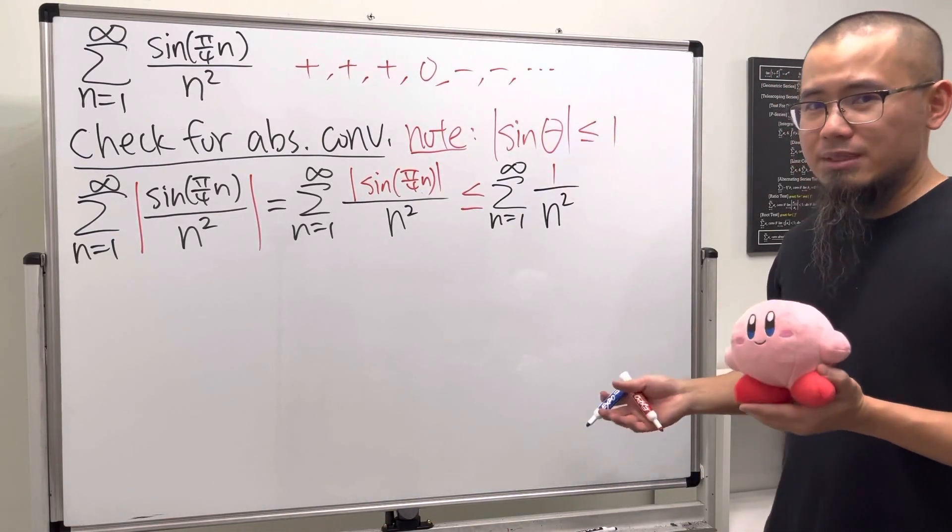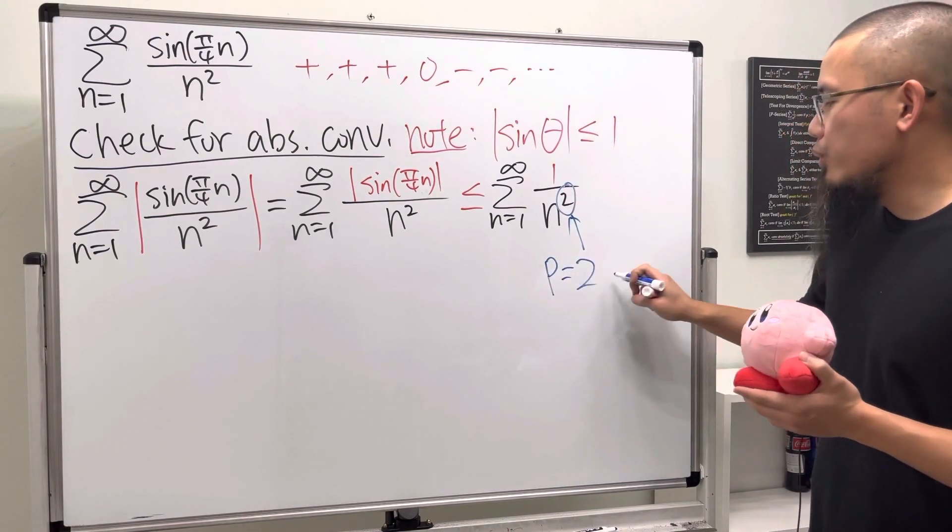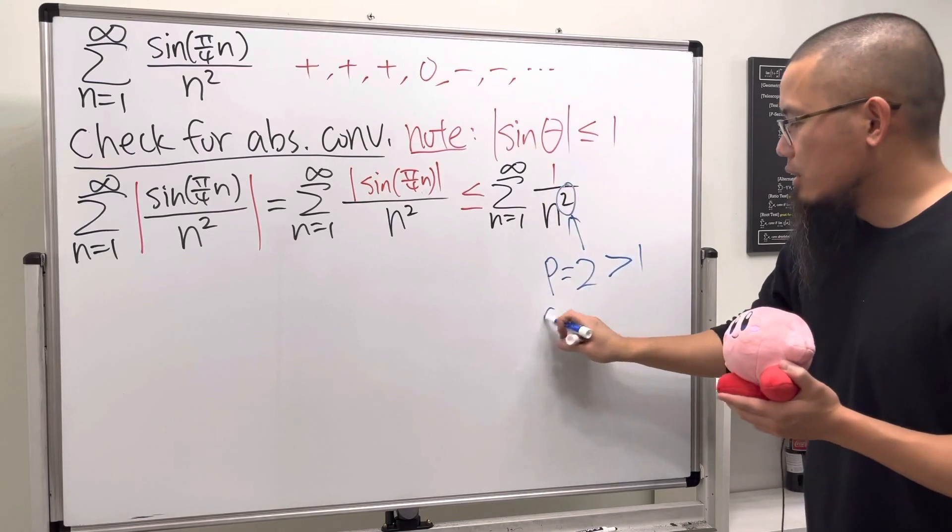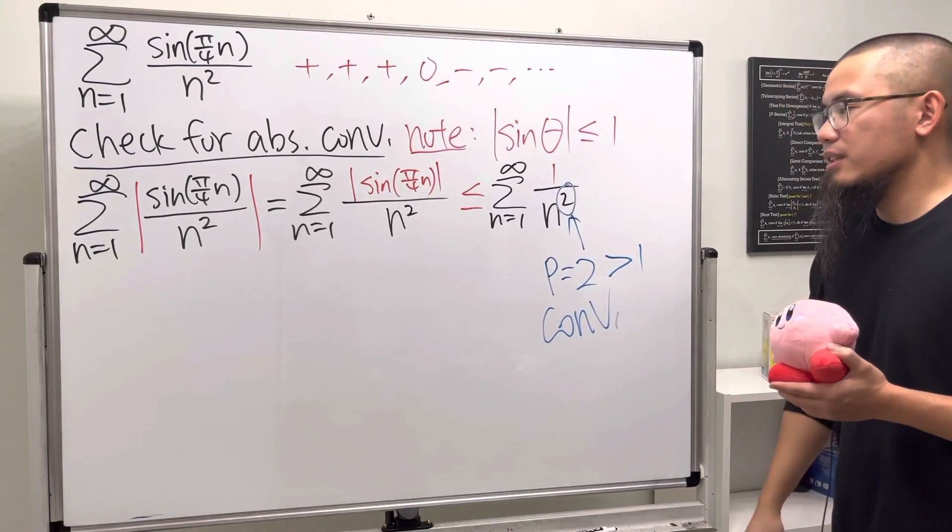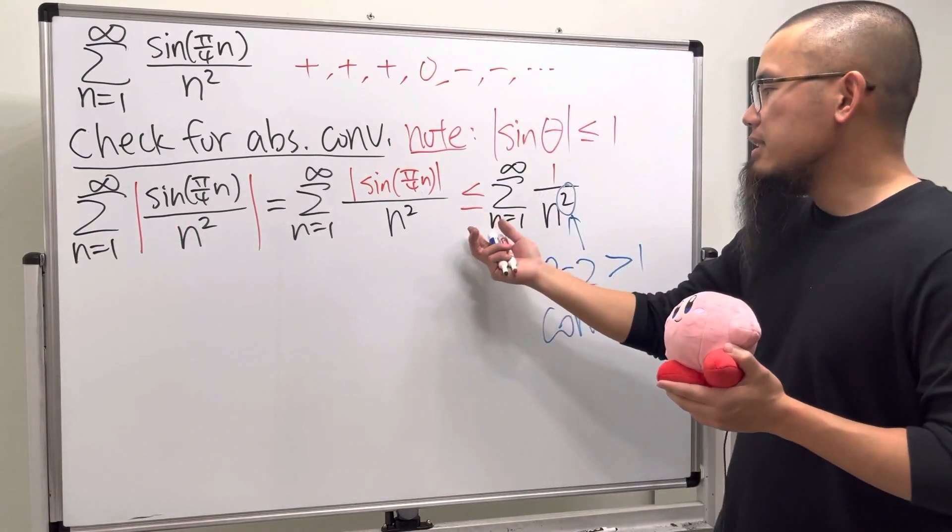Have a look, ladies and gentlemen. This is a very nice p-series. We know that p equals 2, which is greater than 1, and that means this series converges.